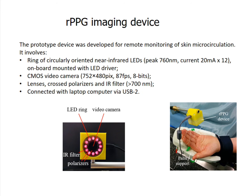The prototype device was designed for remote monitoring of skin microcirculation. It involves a near-infrared LED illuminator and video camera, both placed in a small 3D-printed case. The illuminator comprises a ring of 12 circular-oriented near-infrared LEDs connected with an LED driver. Video acquisition is performed by a board-level CMOS camera equipped with a low-distortion lens. In order to reduce skin specular reflectance, cross-oriented polarizers were placed in front of the light source and video camera. An infrared filter was placed in front of the camera to minimize the influence of ambient illumination. The rPPG device is connected to the computer USB port, which also serves as a power supply for the device.